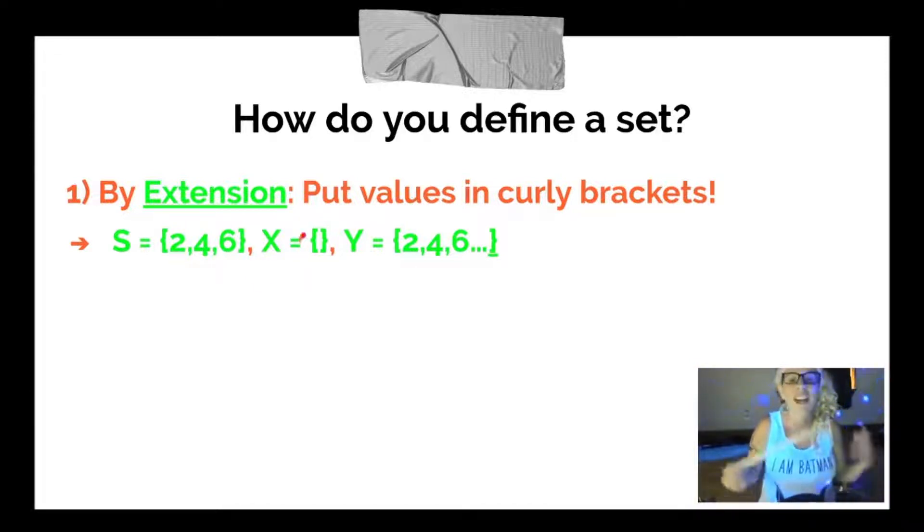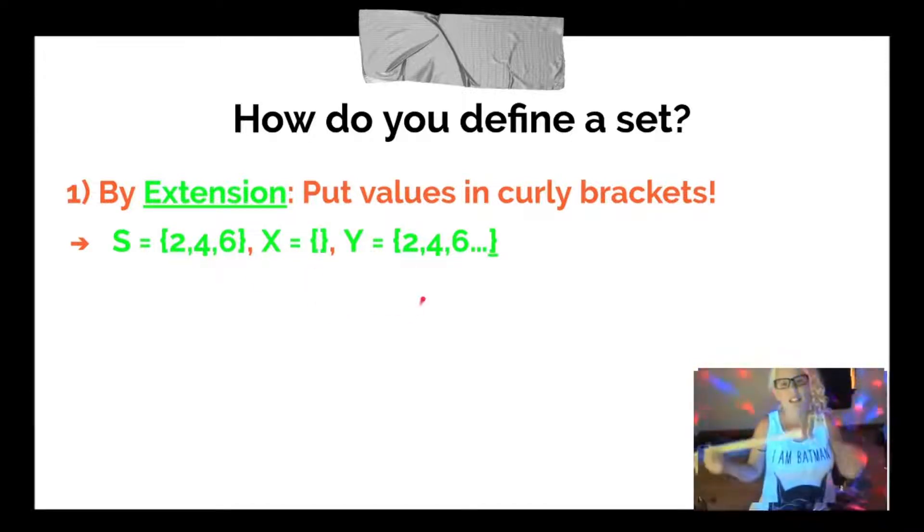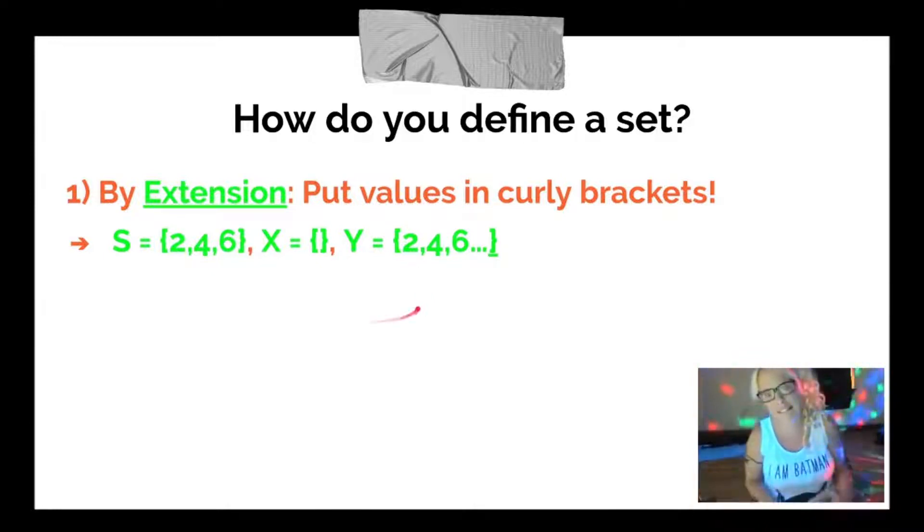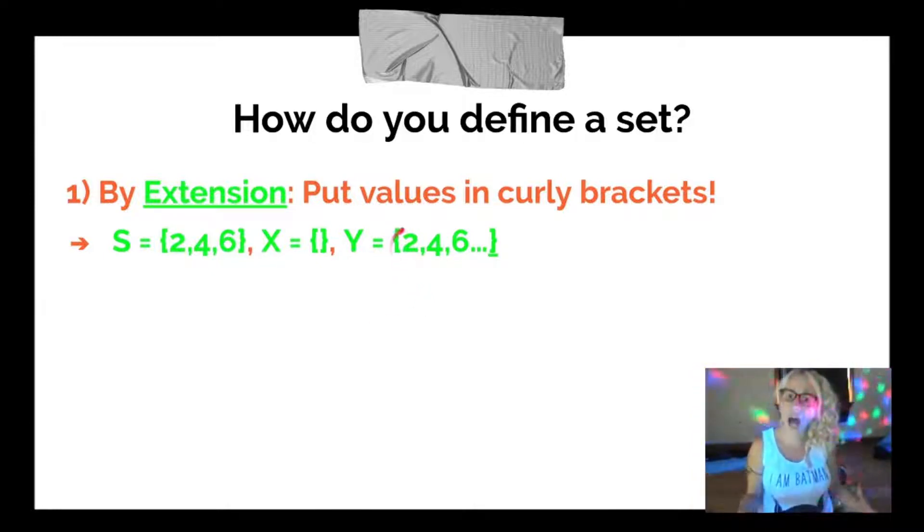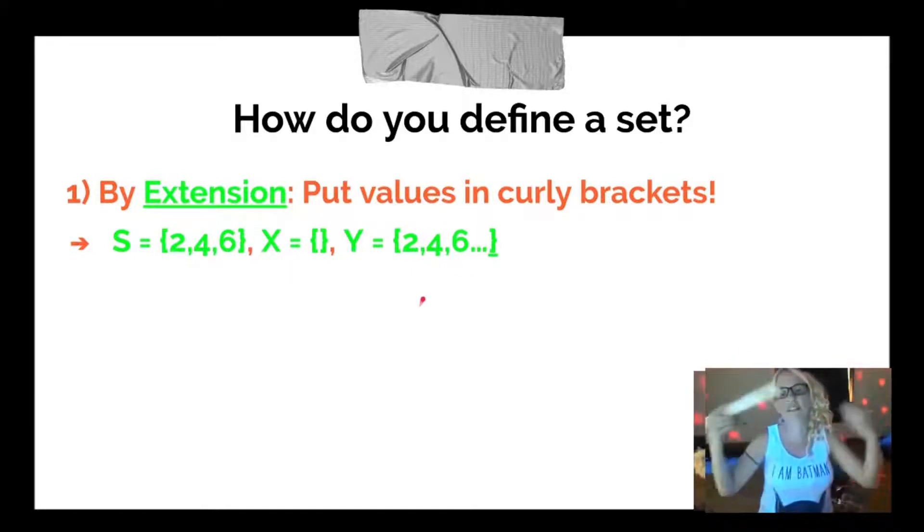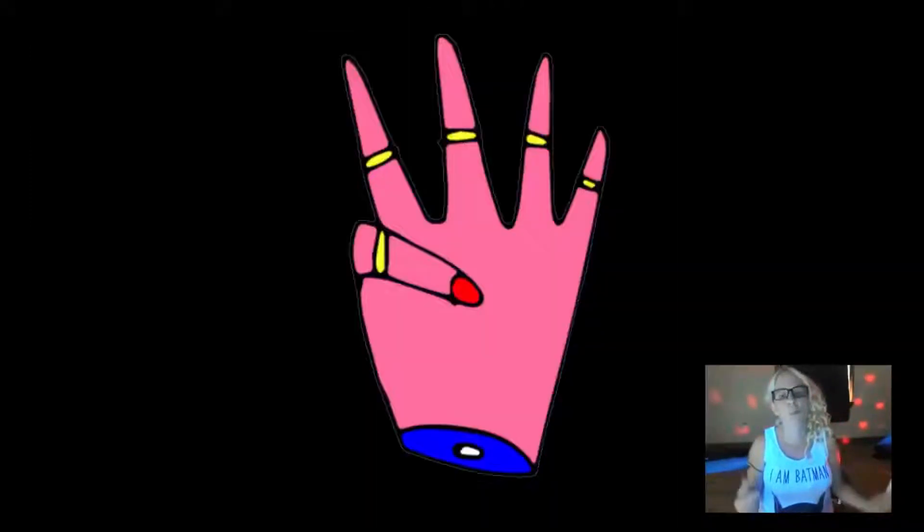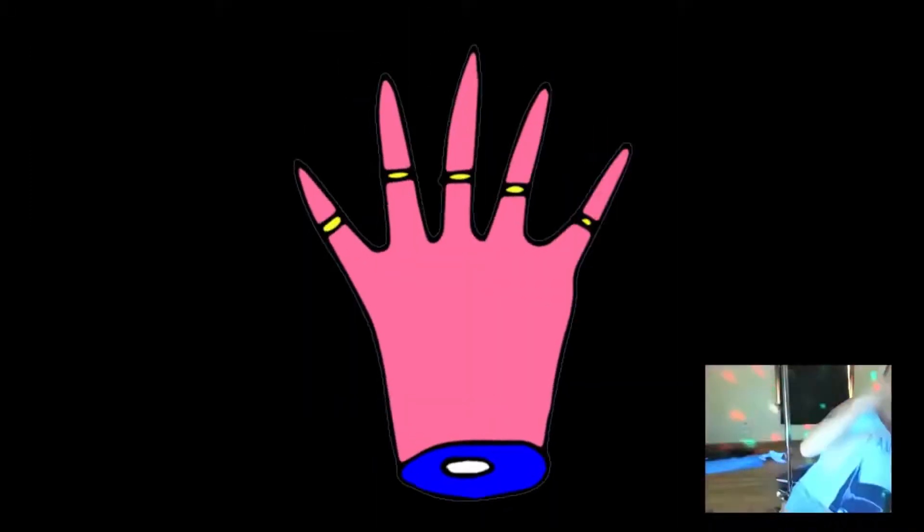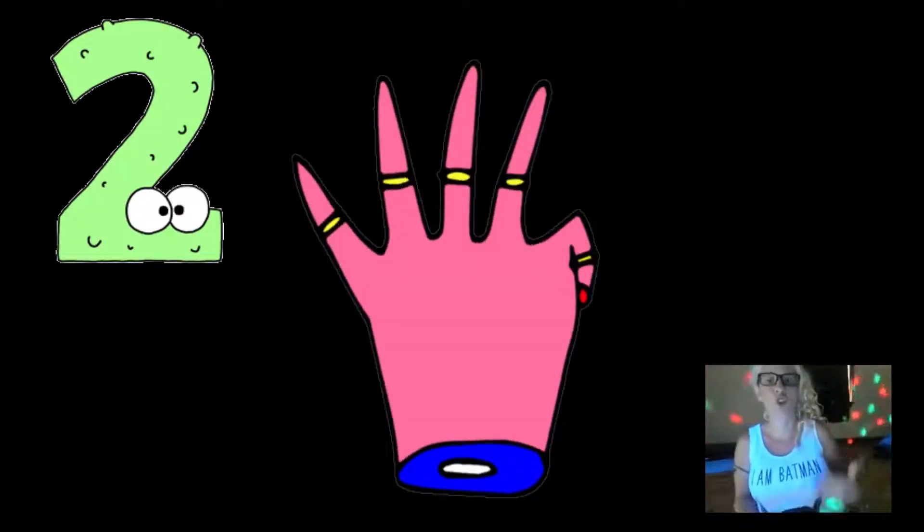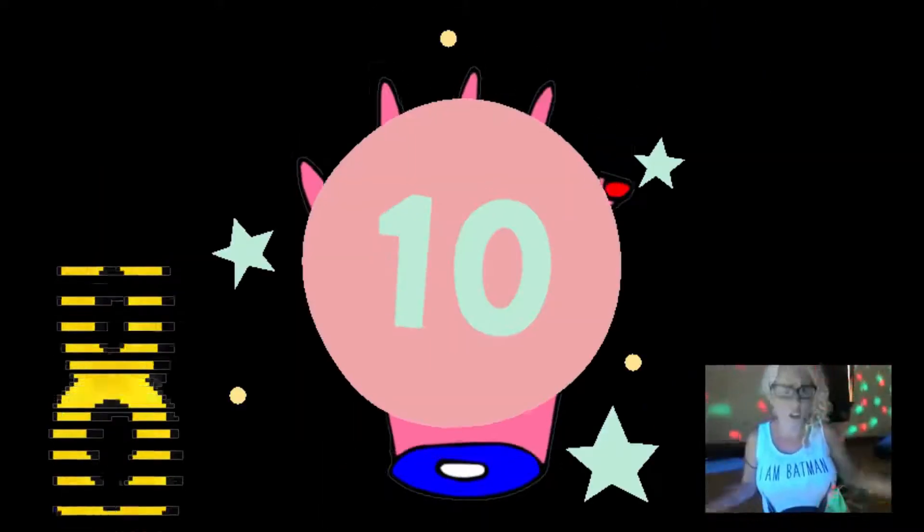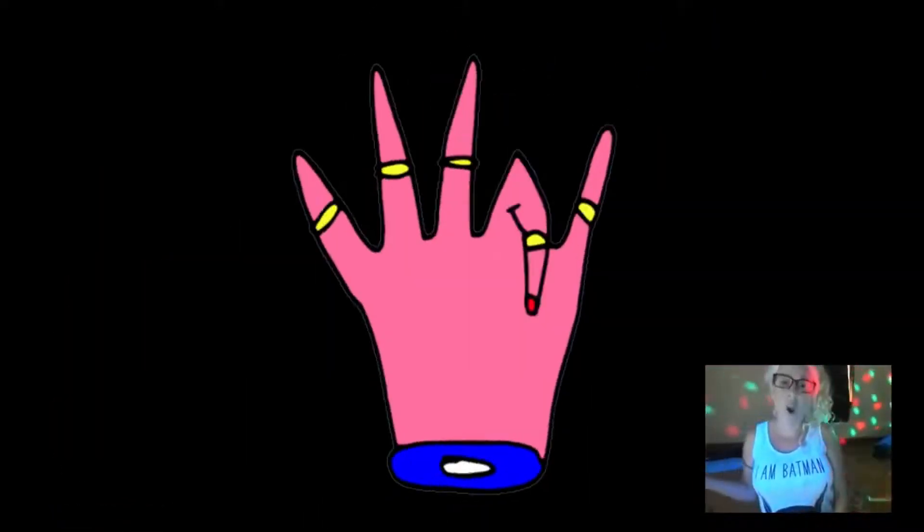The second example, I have X equals empty set. In this example, when you just have the curly brackets and nothing inside, it's just an empty set. Nothing's in this mofo. The last example, Y equals 2, 4, 6, dot dot dot. When you see that dot dot dot, that means the pattern continues. So basically, Y is going to be equal to the set of all positive even numbers. 2, 4, 6, 8, 10, 12, 14, and so on.